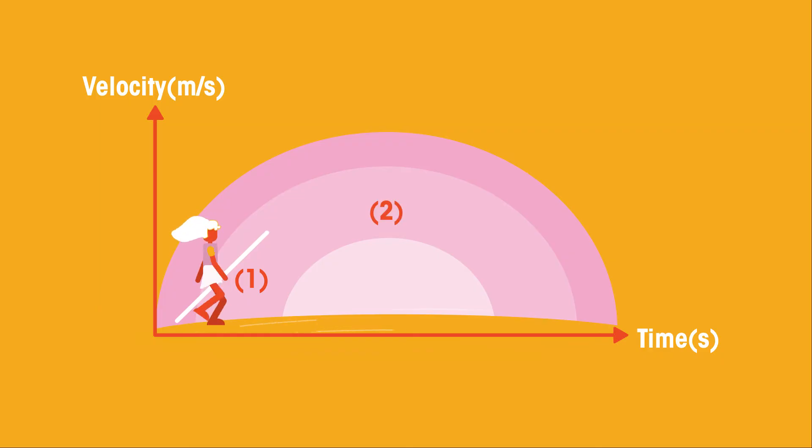After this, she walks at a constant velocity. This means that the line will become horizontal across the graph. In this case, her velocity is no longer changing over time, because she has reached a constant velocity.